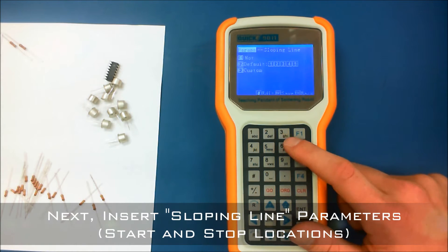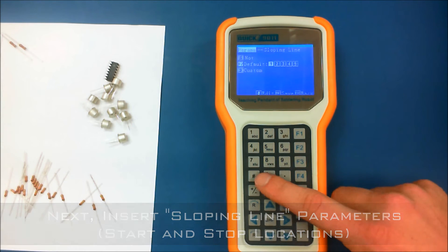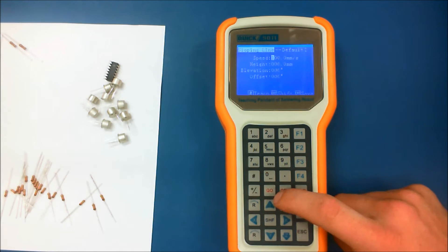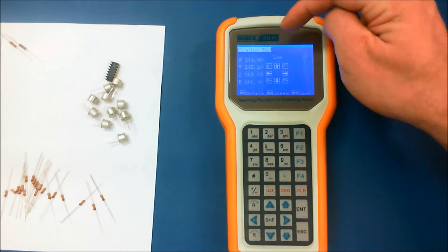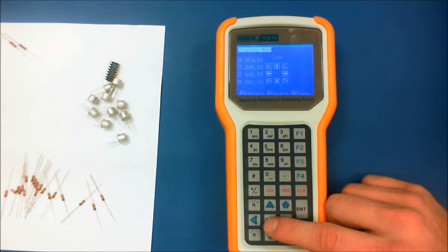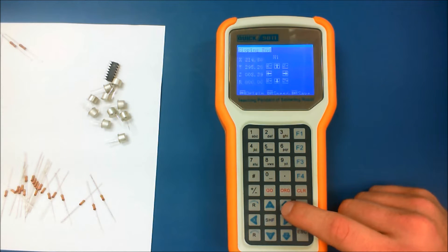And now we're going to insert our sloping line parameters. As easily as this is to explain we'll just go ahead and raise the z directly up for slope line end and slightly over and down to the left or right depending upon how you have the soldering iron orientated. And that will then solidify your start and end point.